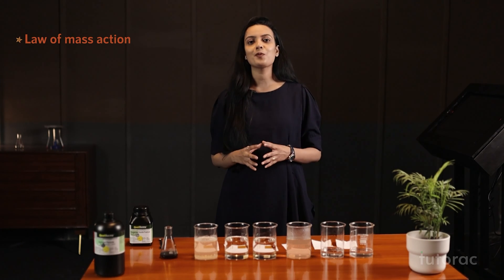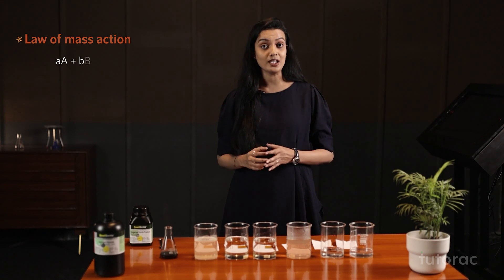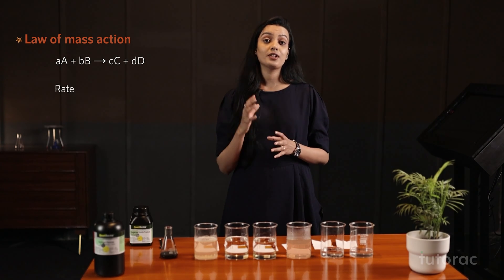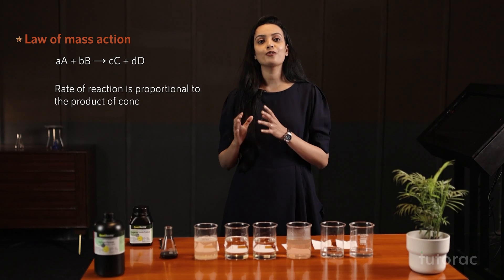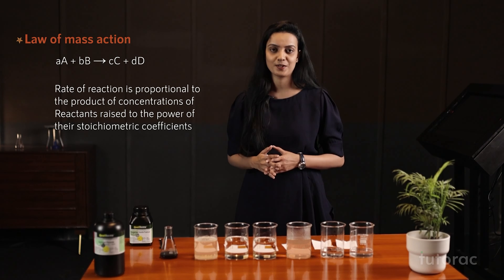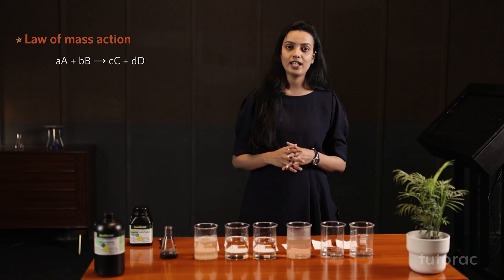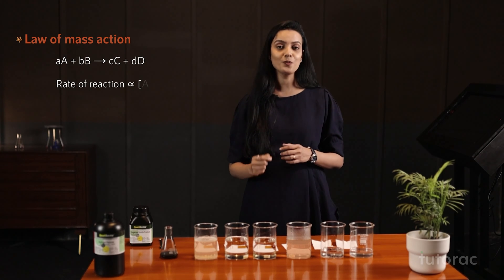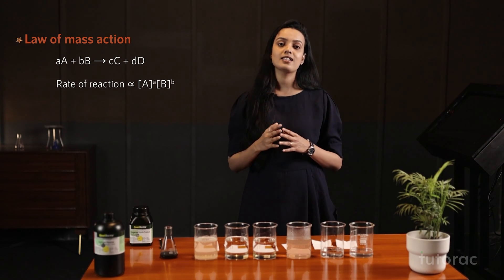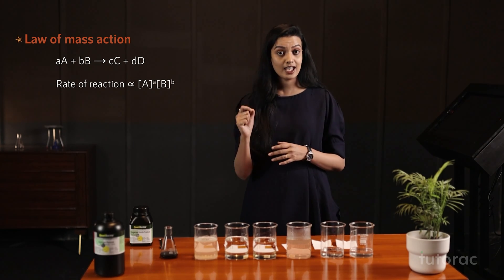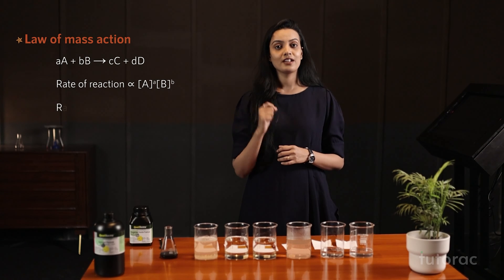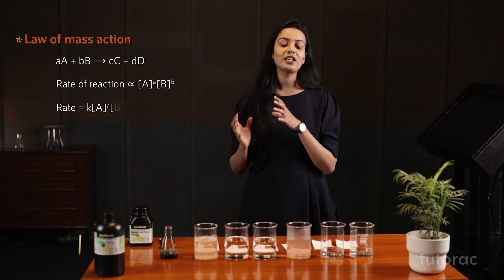Let's see it mathematically. Suppose you have a reaction: aA + bB → cC + dD. According to the law of mass action, the rate of reaction is proportional to the product of the concentrations of reactants raised to the power of their stoichiometric coefficients. So for this reaction, rate ∝ [A]^a × [B]^b. To remove the proportionality sign, we introduce a constant K, known as the rate constant. So: rate = K[A]^a[B]^b.